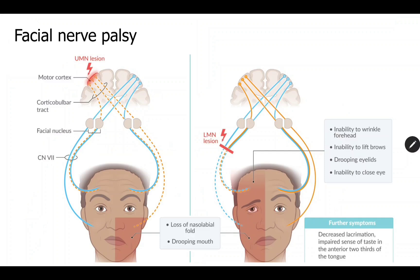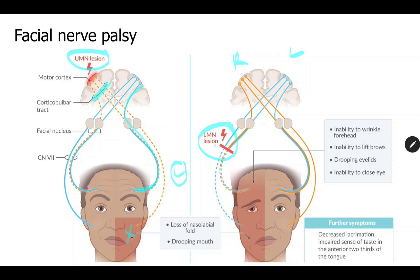In an upper motor neuron lesion involving the upper motor neurons of the left facial nerve, since the upper half of the face receives bilateral supply, the upper half is not affected. But the lower half, which receives supply only from the opposite side, will be paralyzed when those fibers are damaged. If the lower motor neuron is damaged, both the upper and lower halves of that side are affected because both bilateral supplies are lost.